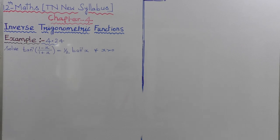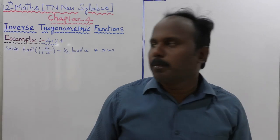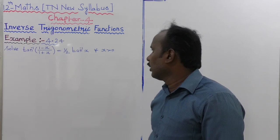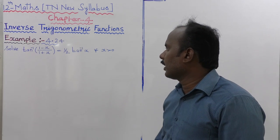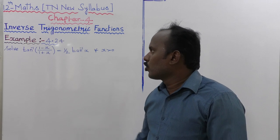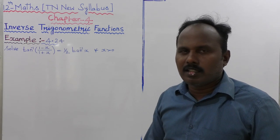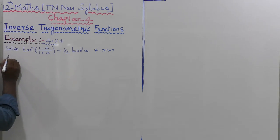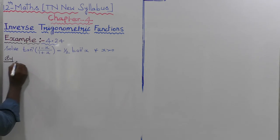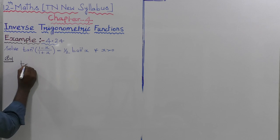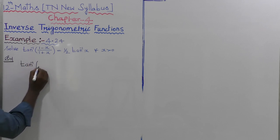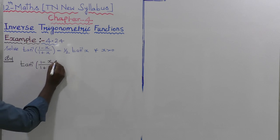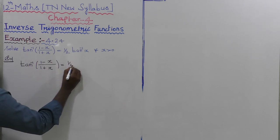Problem 4.24: solve tan inverse of (1 minus x) divided by (1 plus x) equals 1 by 2 into tan inverse of x, for all x greater than 0. Find out the value of x. Given: tan inverse of (1 minus x) divided by (1 plus x) is equal to 1 by 2 tan inverse of x.